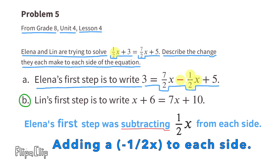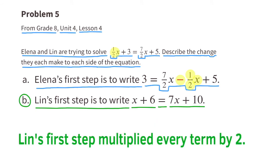B: Lynn's first step is to write X plus 6 equals 7X plus 10. The half X doubled to 1 whole X, the 3 doubled to 6, 7 halves X doubled to 7X, and 5 doubled to 10. Lynn's first step multiplied every term by 2.